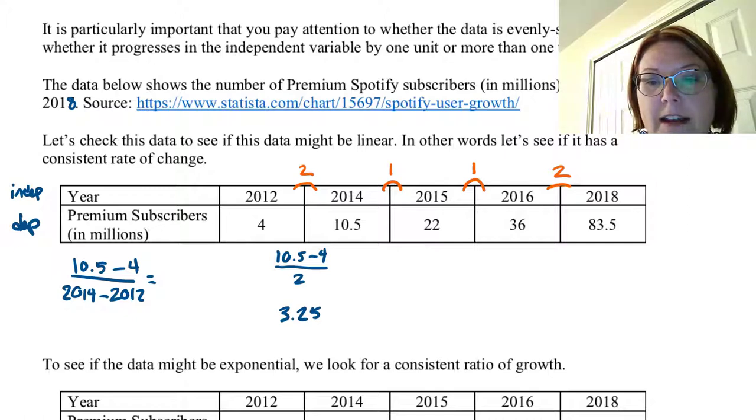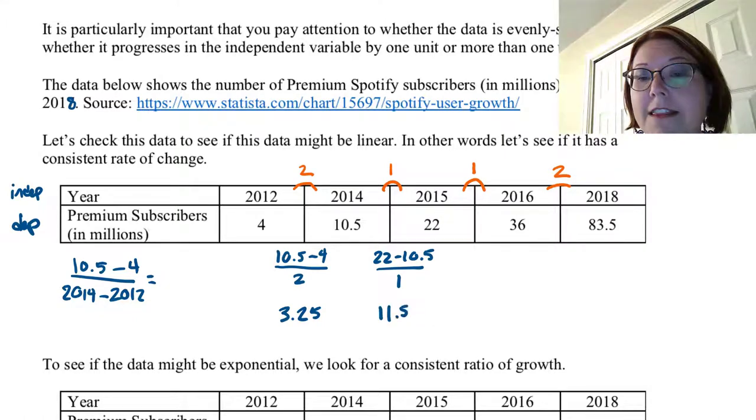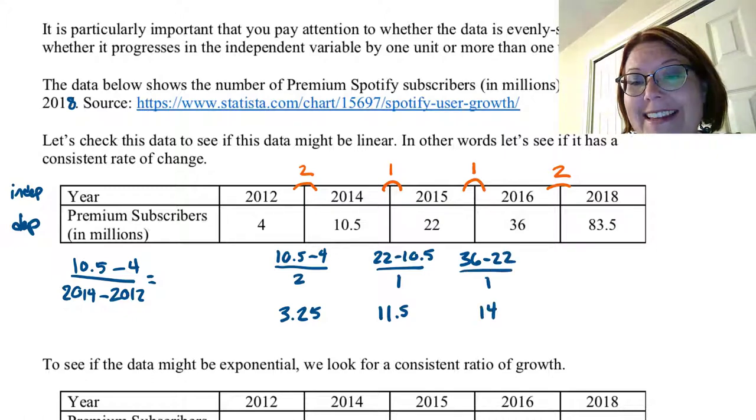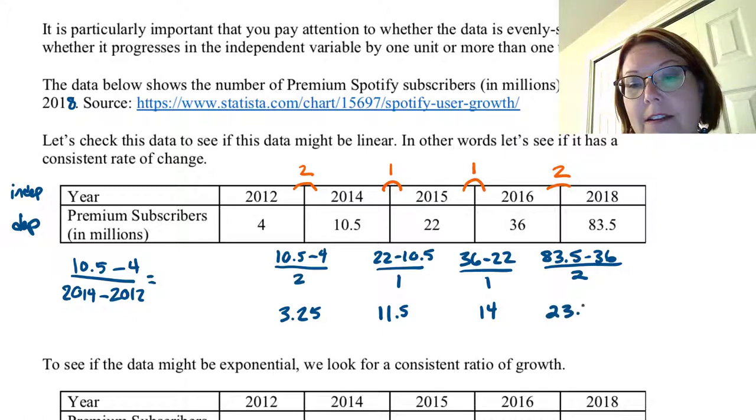For my next pair, I have 22 minus 10.5 and that's over 1, which gives us 11.5. The next pair is 36 minus 22 all over 1, which is 14. And then 83.5 minus 36 all over 2, which is 23.75.